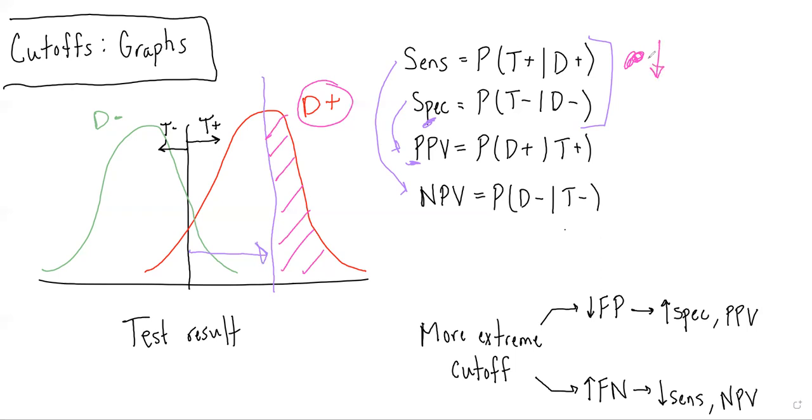The amount of area under that disease positive curve that's to the right of this new cutoff is smaller than it had been with the initial cutoff. At the same time, if we look at specificity, which again is the probability of getting a negative test result given you do not have the disease,